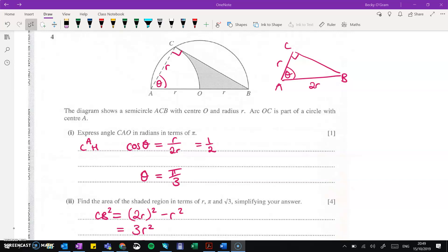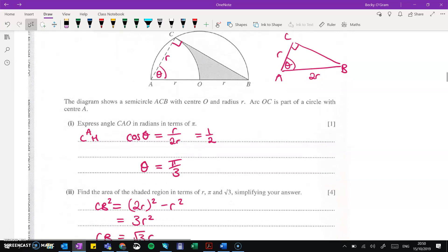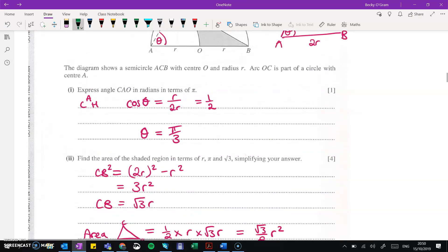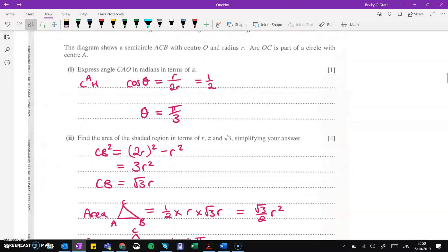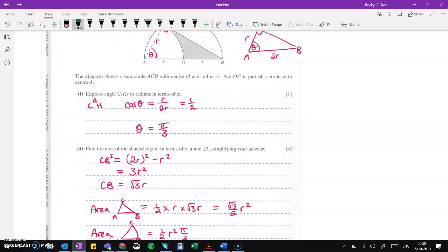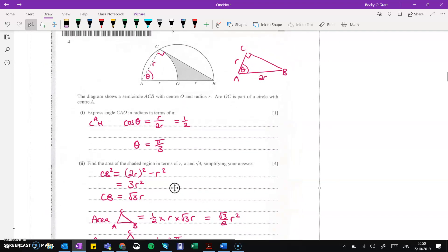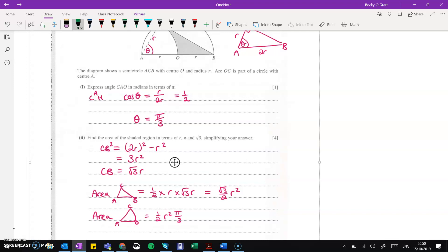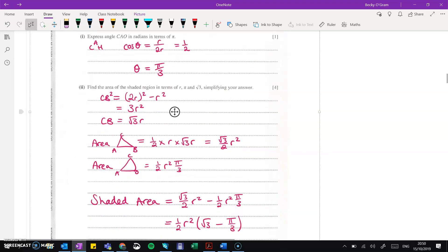Now finding the area of the shaded region, we need to find the area of the triangle and then subtract the area of this sector. So the area of, well, each of those, we need to find CB first. So working through that bit there, the area of the triangle is then half times r times √3r. So that's half the base times the height from this triangle that we've got. Then the area of the sector is half r² theta. Put in the theta that we worked out in part one. And then the shaded area will be the area of the triangle minus the area of the sector to give us our final answer and simplify it down.